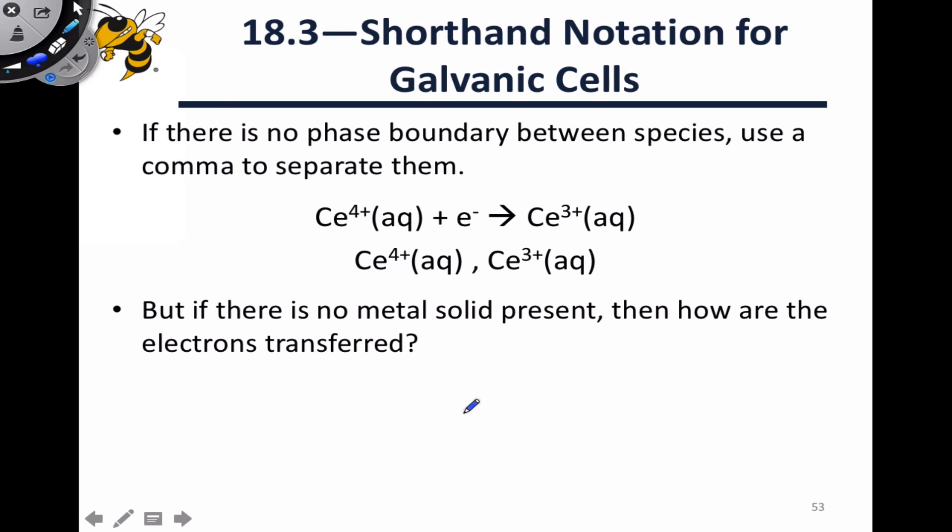While we're on the topic of cell notation, it's worth considering half cells in which the entire redox reaction is aqueous. This is a great example, cerium 4+, can pick up an electron to form cerium 3+. In that case, if there's no phase boundary between the species, we use a comma to separate them within the cell notation, rather than a vertical line, because they're not separated by a phase boundary. They're both aqueous.